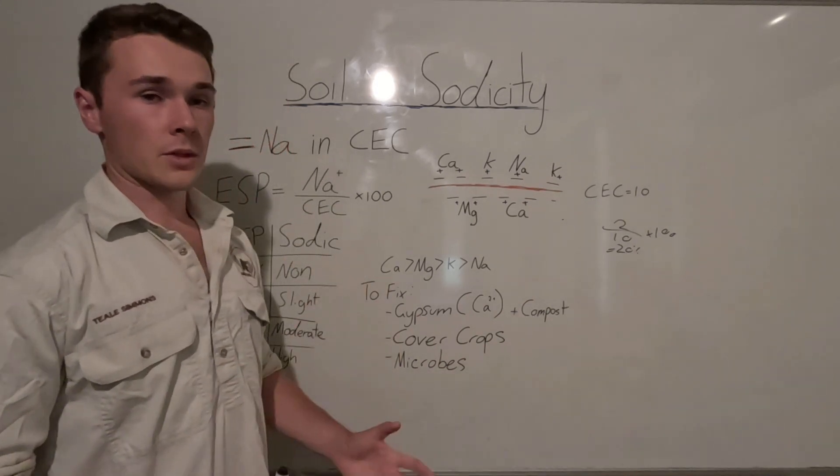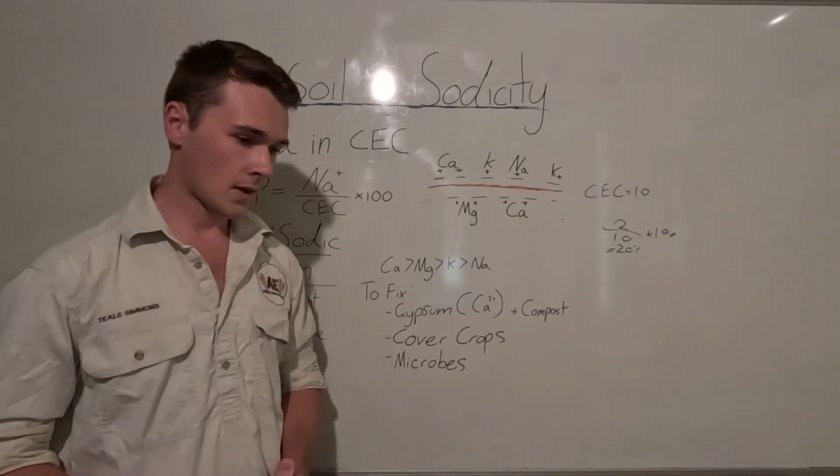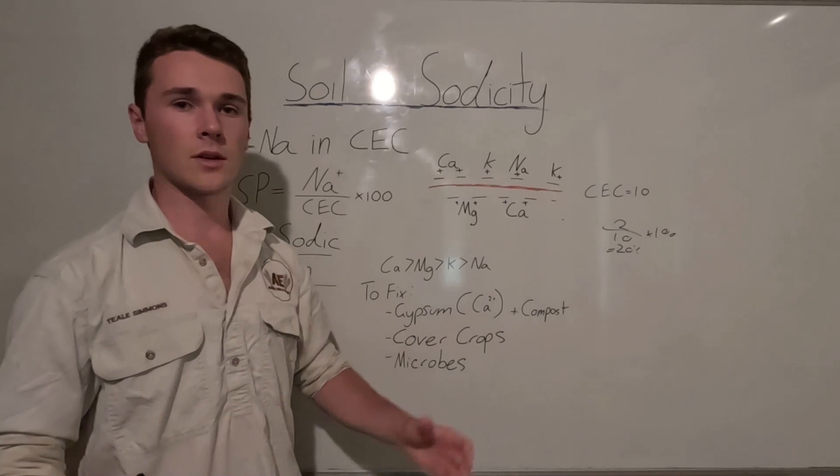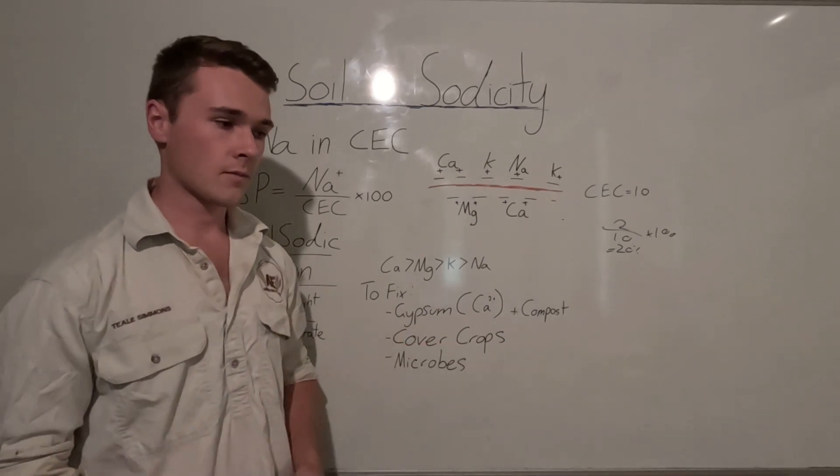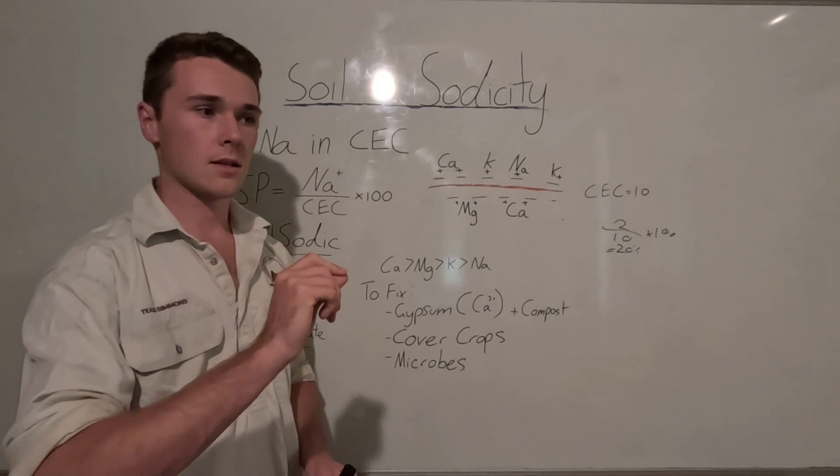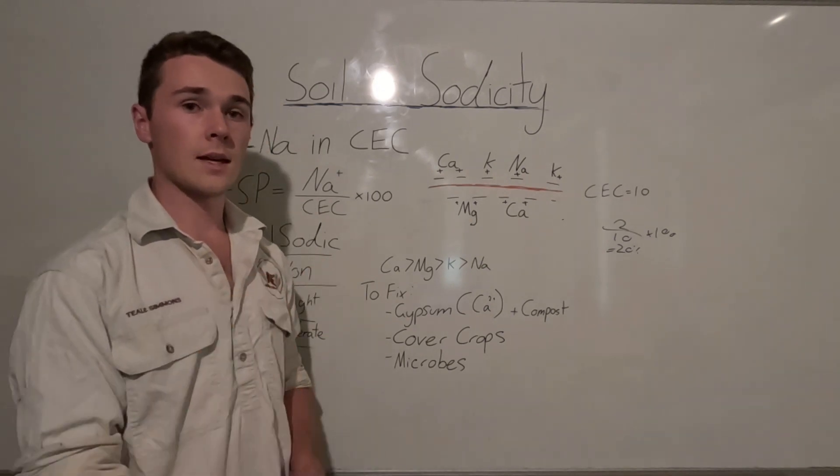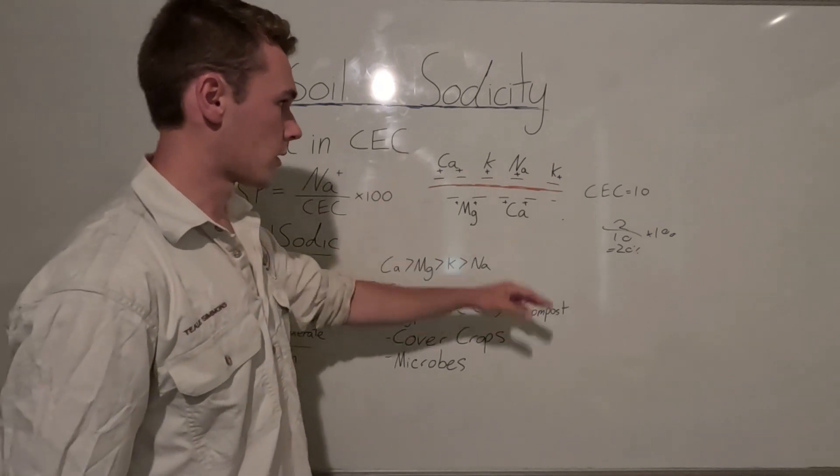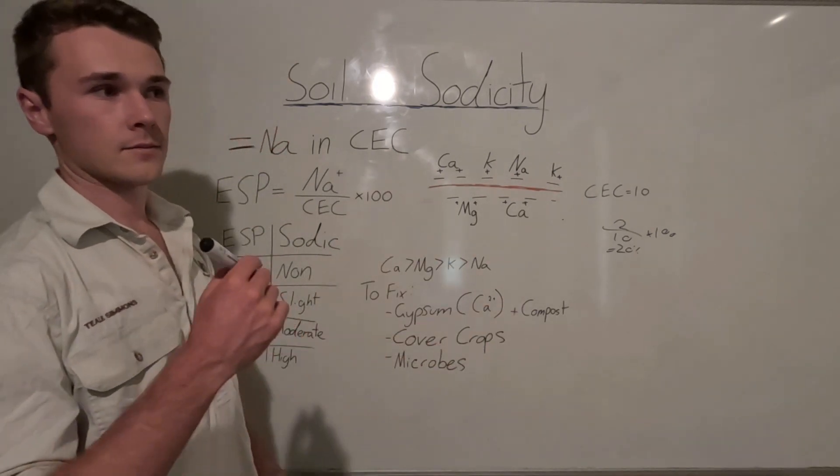Another thing that we could do is use cover crops. The thing about cover crops and just plants in general is that they release carbon dioxide as the roots respire, and what that will do is slightly acidify the soil. So with that, calcium becomes more available and then knocks off the sodium as well.